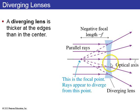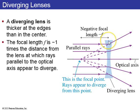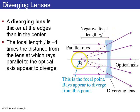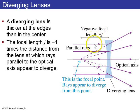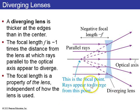A diverging lens, seen edge-on, is thinner at the center than toward the edges. If the diverging lens is ground properly, all parallel rays appear to be emanating from a virtual focal point on the same side as the incoming rays. If you take the distance between that focal point and the center of the lens and multiply by negative one, that's the focal length of this diverging lens. Diverging lenses have negative focal length, but again, this is a property of the lens independent of how it is used.